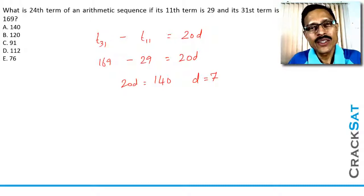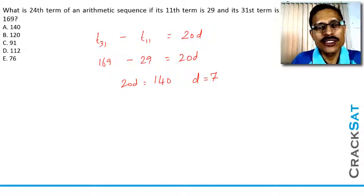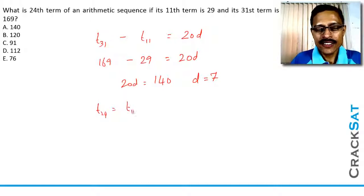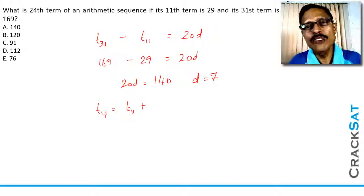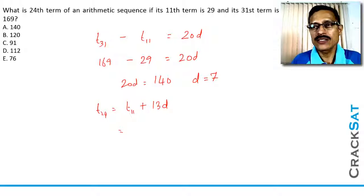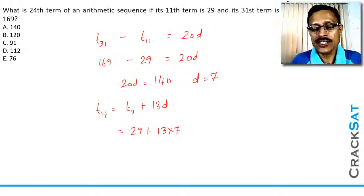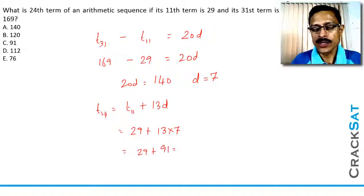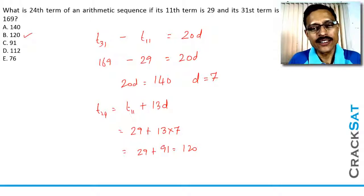Taking this one step further, we will not find the first term at all. Instead, we find the 24th term directly from the 11th term. The 24th term is 13 terms away from the 11th term, so it equals the 11th term plus 13 times the common difference. The 11th term is 29 and d is 7, so 29 plus 13 times 7 equals 29 plus 91, which equals 120. This alternative method is the one I would ideally recommend.